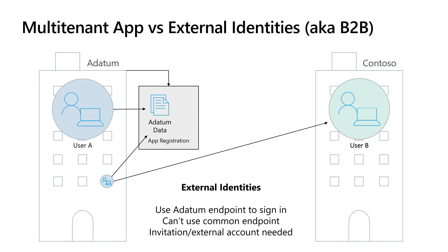This contrasts with our external identities or business-to-business B2B model. In a B2B model, A Datum wants to share some resources and data with a user from Contoso. In that case, A Datum has to invite user B from Contoso to become a guest user and participate in the A Datum tenant.